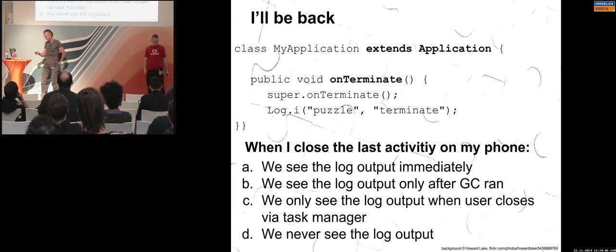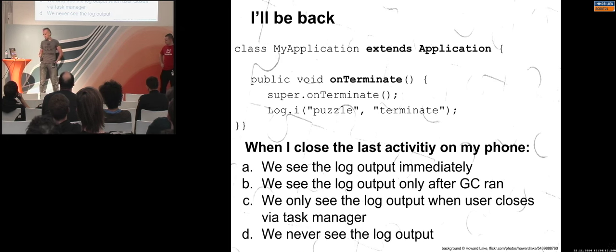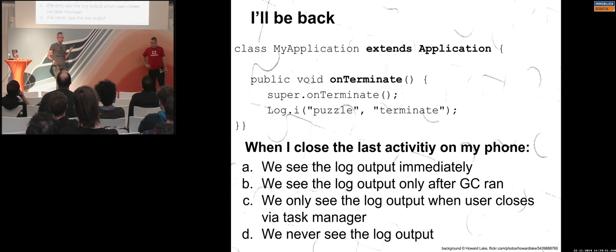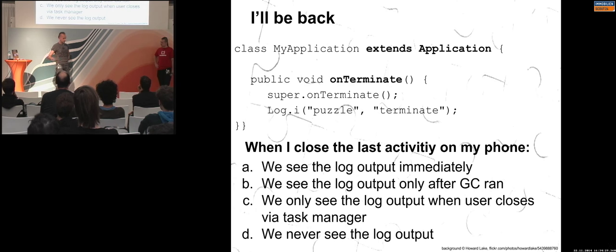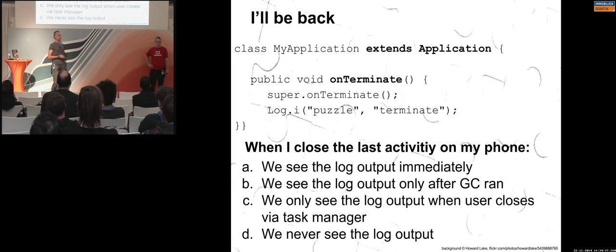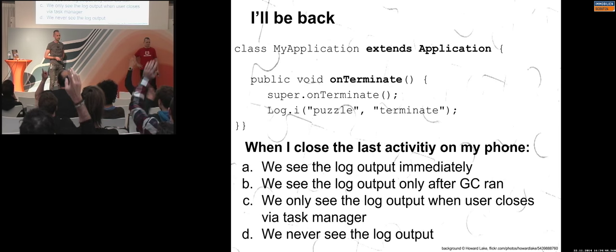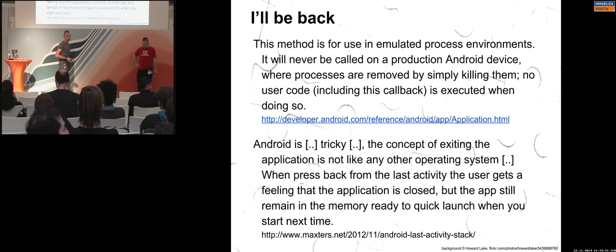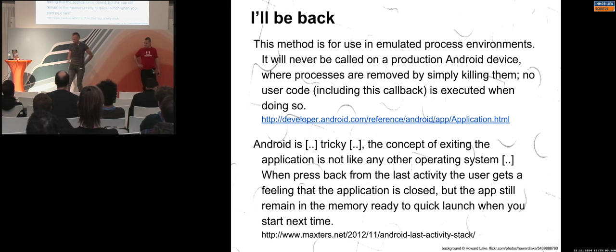Very simple one. We have an Android Application subclass with the onTerminate method. I put a log there and we want to know: when I close the last activity of that application, what happens? Do I see the log output immediately? Maybe after some garbage collection? Only when the user swipes the app away in the task manager? Or — option D — we never see the log output. The answer is D: you never see it, because this method will never be called. It's for an emulated environment only. It doesn't work on any real device. Don't use this method.